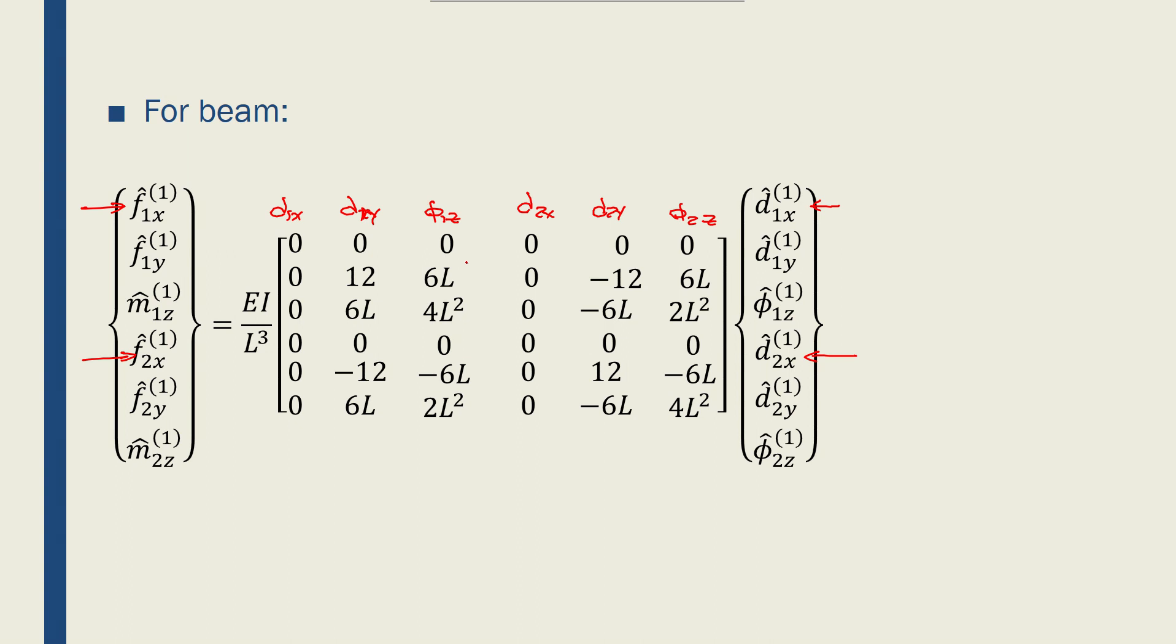I only had these values, D1y and D1y, which was 12, F1z and D1y, which was 6L, but I don't have any values for D1x or D2x. That's why I put 0s here and in this column. So, they're all 0s.